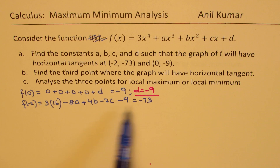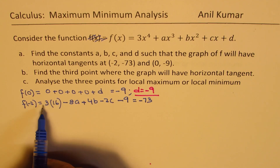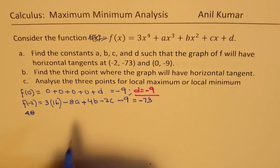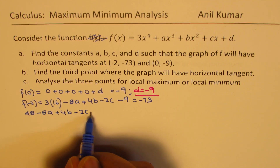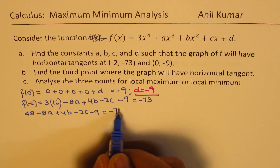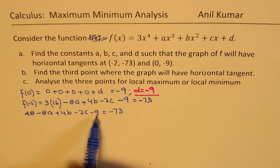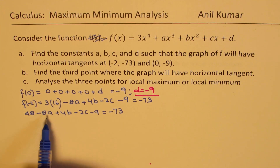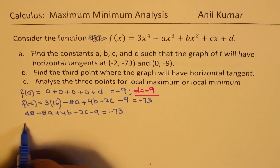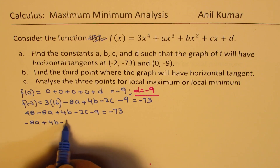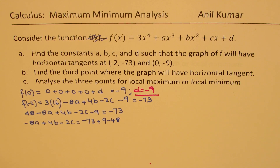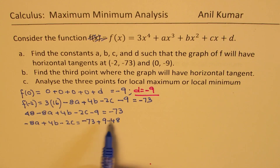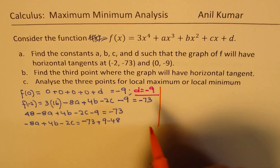From this condition we get an equation for a, b, and c. Computing: 3 × 16 = 48. So we get -8a + 4b - 2c - 9 = -73, and moving 48 and 9 over: -8a + 4b - 2c equals -73 plus 9 minus 48. We'll complete this arithmetic shortly.